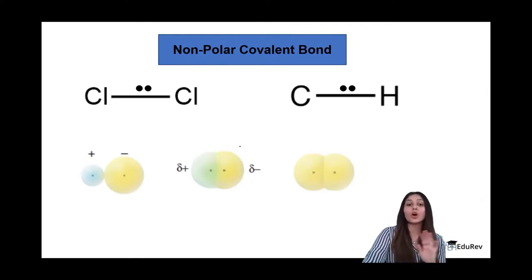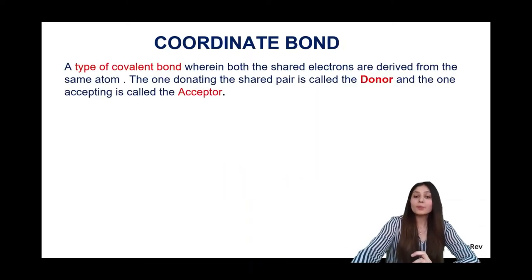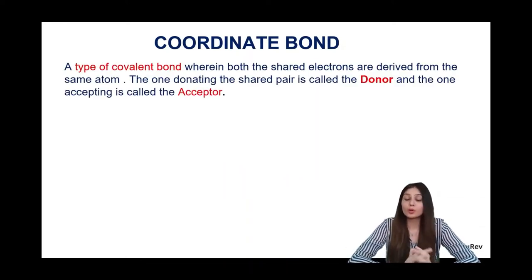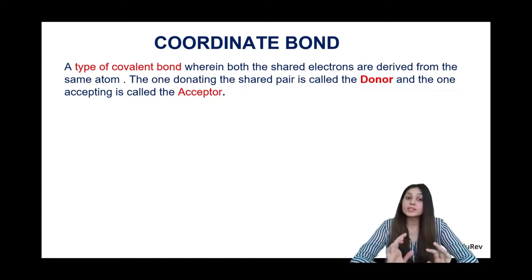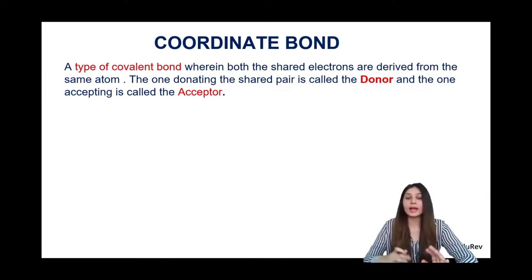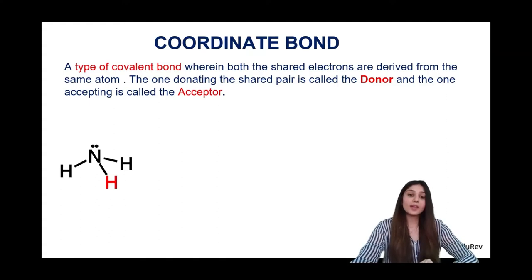To summarize: ionic bonds have ions formed; polar covalent bonds have polarity; and non-polar covalent bonds have a completely non-polar system. A coordinate bond is exactly like a covalent bond in that we have sharing of electrons, but the difference is that in a covalent bond the shared pair has one electron from each atom, whereas in a coordinate bond both electrons of the shared pair are donated by one atom.